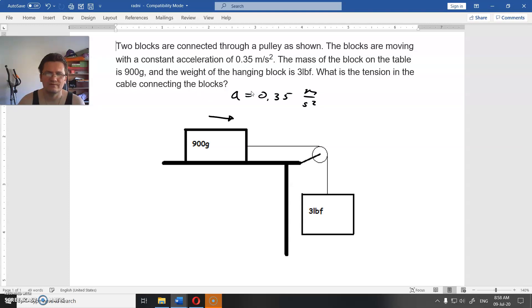This block will move with that acceleration in this direction. This block will move downwards with that same acceleration because they are connected with cable. The mass of the block on the table is 900 grams, and this is 3 LBF. So what is the tension in cable connecting two blocks?